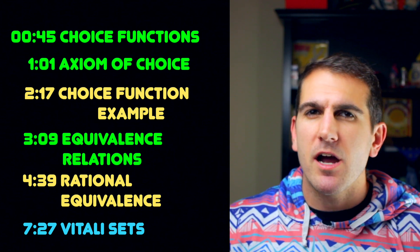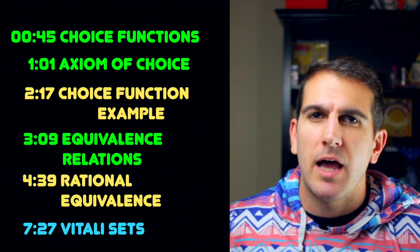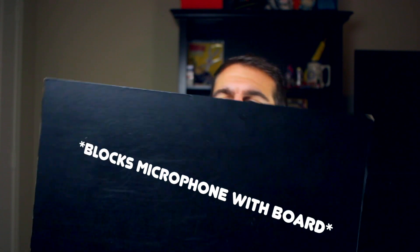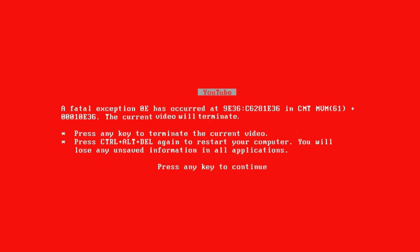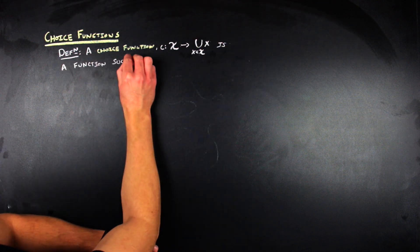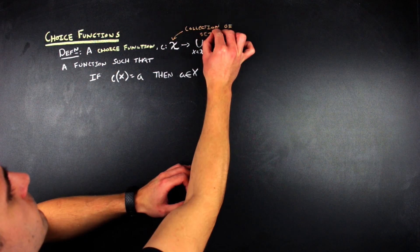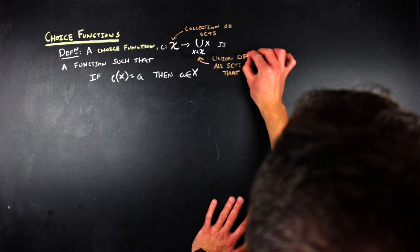I haven't really talked about the axiom of choice or choice functions in a really long time, so with that in mind I'm going to start with those. A choice function is a function from a collection of sets to the union over that collection, such that the function maps a set from the collection to one of that set's elements.